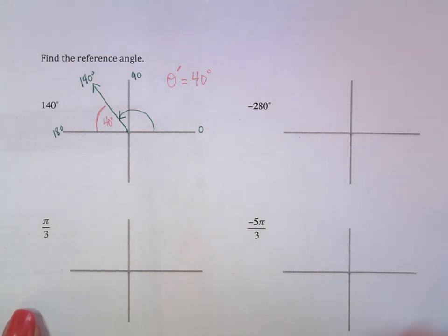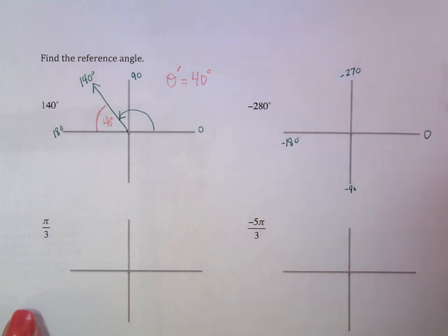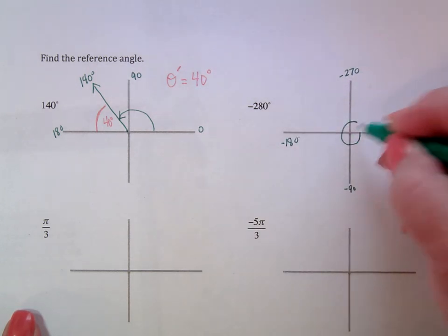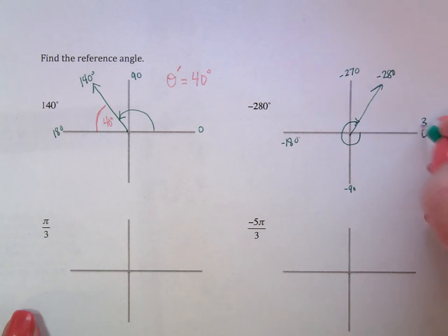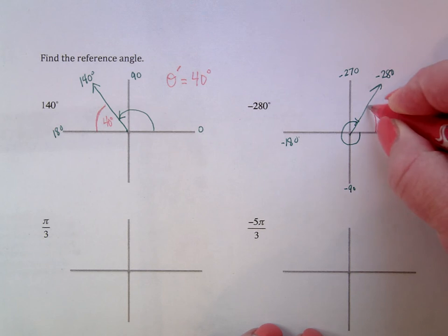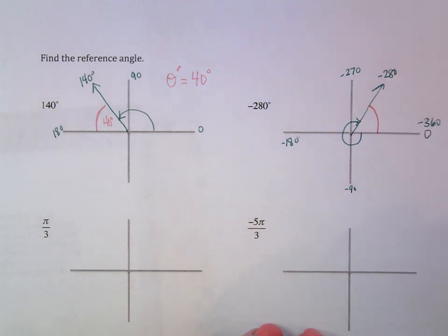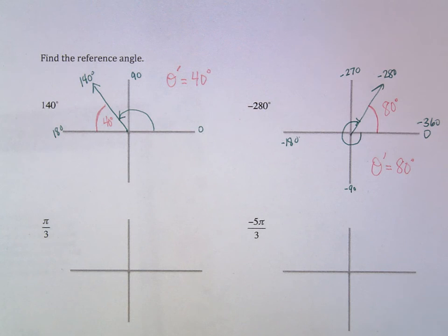Second example: negative 280. Going in a negative direction — negative 90, negative 180, negative 270 — I'm heading all the way into the first quadrant in a negative direction. A full circle closes at 360, so negative 360 would close. The question: how far is it to the closest x-axis? To go from 280 to 360, you need 80 degrees. Your reference angle theta prime is 80 degrees — positive and acute.